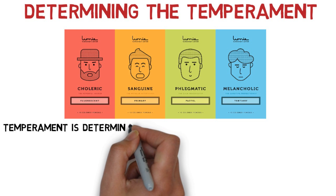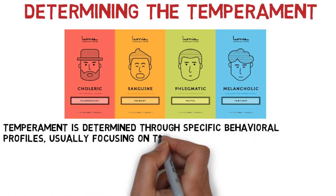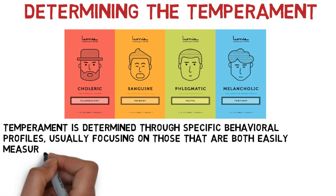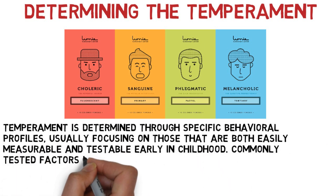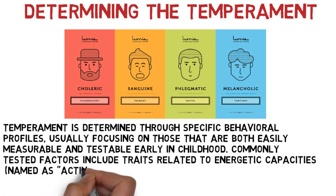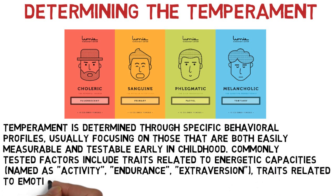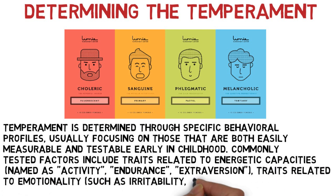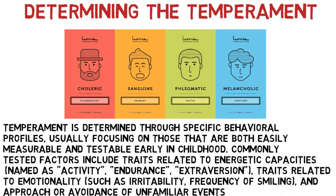Determining the temperament. Temperament is determined through specific behavioral profiles, usually focusing on those that are both easily measurable and testable early in childhood. Commonly tested factors include traits related to energetic capacities such as activity, endurance, and extroversion, as well as traits related to emotionality such as irritability, frequency of smiling, and approach or avoidance of unfamiliar events.